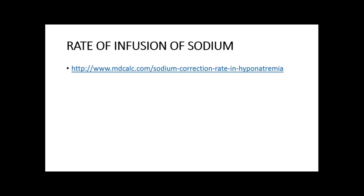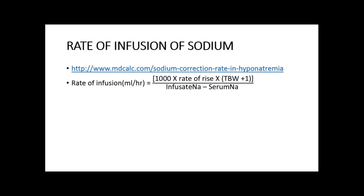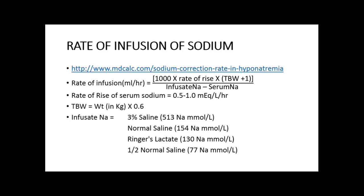The rate of infusion of sodium can be calculated online or by the formula: 1000 × (rate of rise) × (total body water + 1) / (infused sodium − serum sodium), giving the rate in ml/hr. The rate of rise is 0.5 to 1 mEq/L per hour — for simplicity, use 1 mEq/L per hour. Total body water = weight in kg × 0.6. Infused sodium values: 3% saline = 513, normal saline = 154, Ringer's lactate = 130, half-normal saline = 77 mEq/L. Insert patient's serum sodium to find the infusion rate.